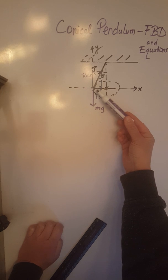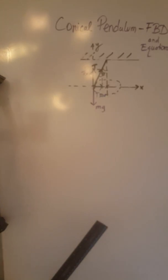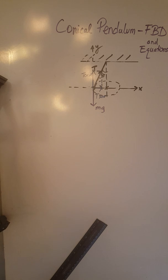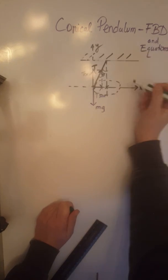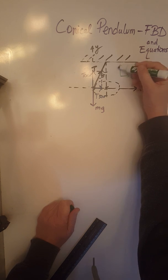So our new mg and T cosine theta are now balanced, and the net force, the unbalanced force, is center-seeking, directed towards the center of the circle. Now we are going to choose our positive directions, and I'm going to say to the right for x and up for y.